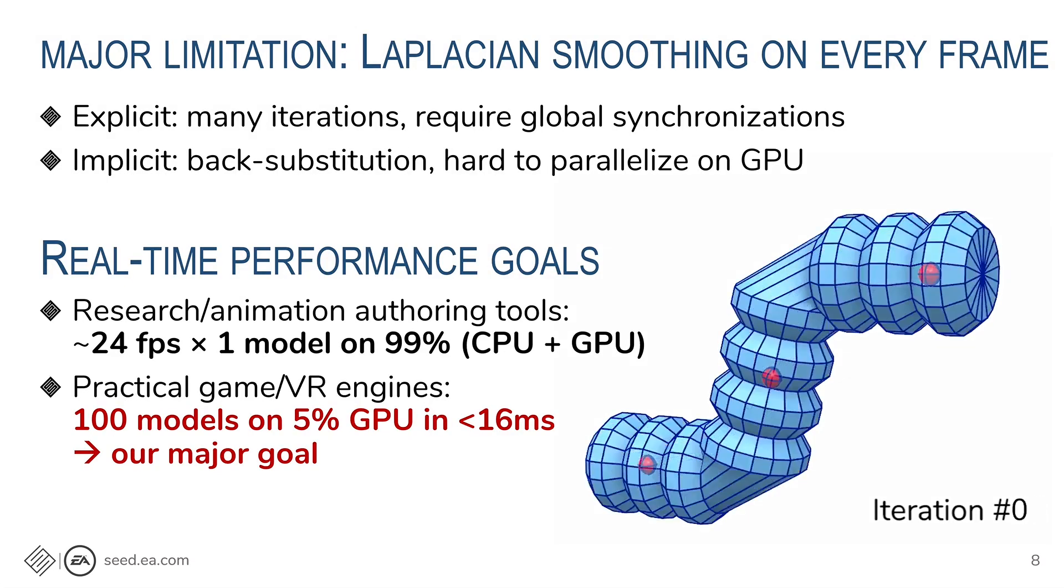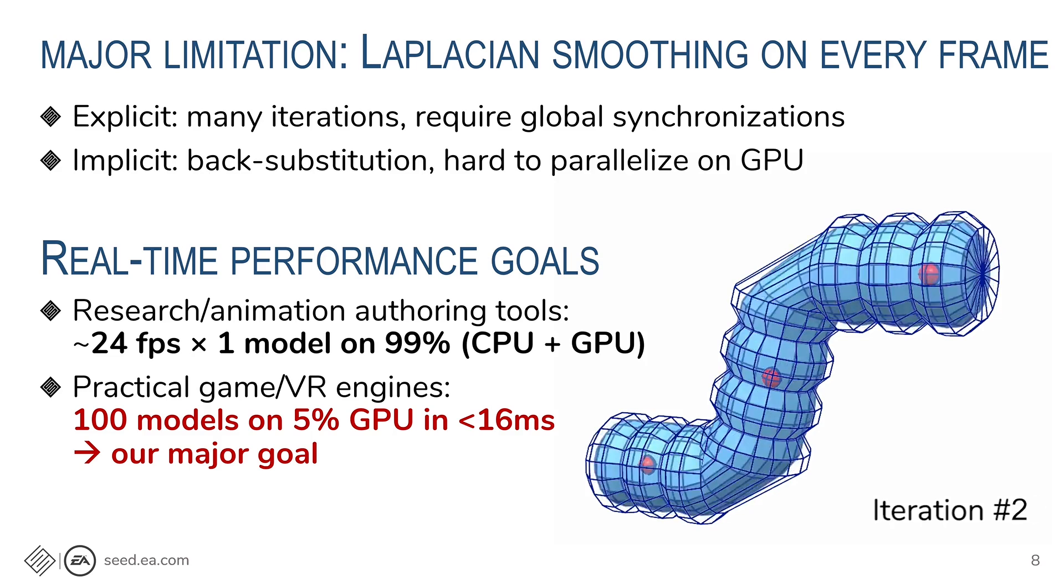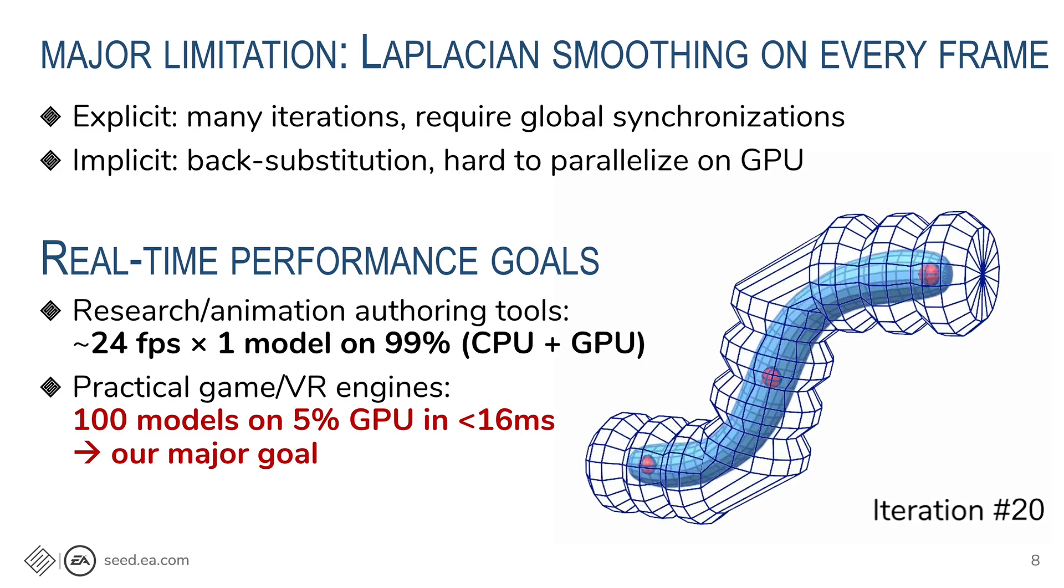But in terms of computational complexity, it's not so nice. The Laplacian smoothing is an iterative algorithm. For each animation frame, many iterations need to run sequentially with synchronization in between them. Using implicit Laplacian can reduce the number of iterations. But the trade-off is each iteration needs to solve a large scale linear system. And even with prefactorization, the back substitution step is hard to parallel on GPU. So even though Delta mush can reach real-time performance for small scale research and authoring tool, it's not suitable for large scale and high performance game and VR engines.